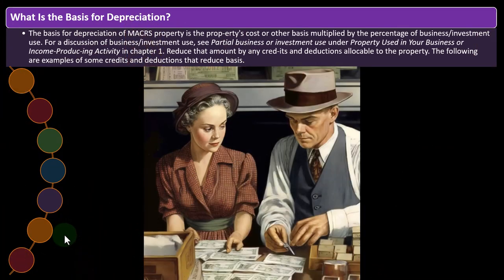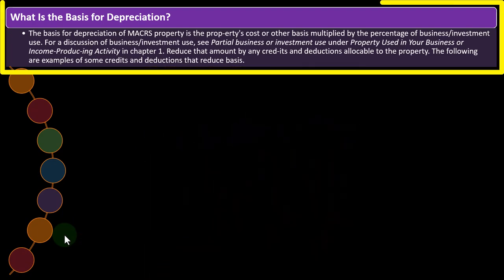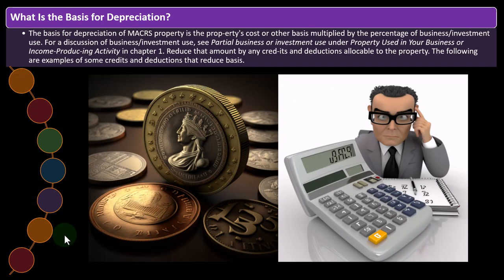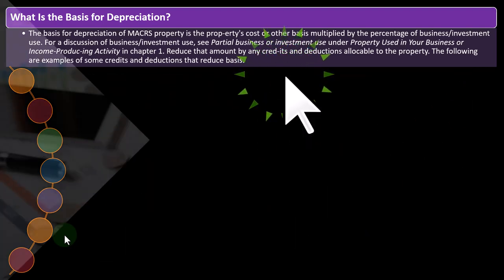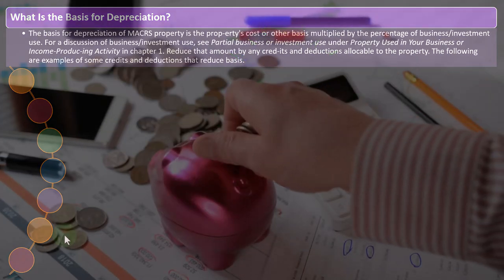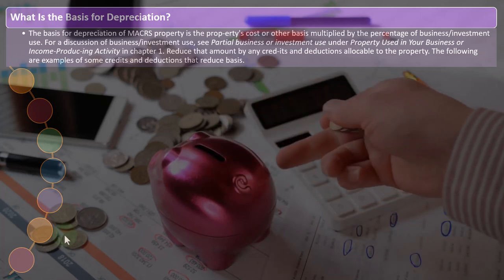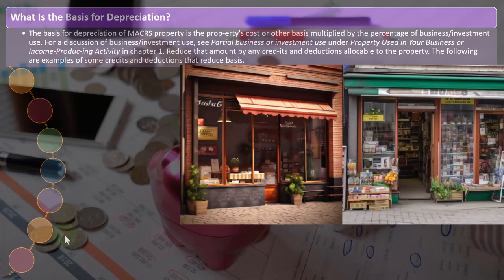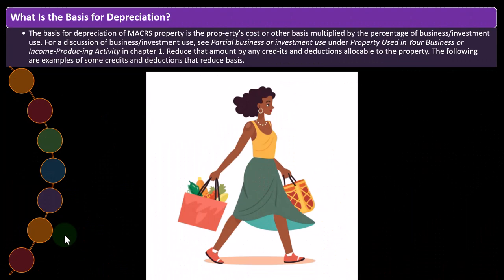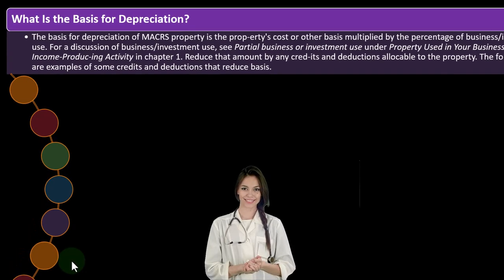What is the basis for depreciation? We can think of the basis as similar to the cost or the adjusted cost of some kind. The basis for depreciation of maker's property is the property's cost or other basis multiplied by the percentage of business or investment use. Obviously, if we use the thing 100% for business, that would essentially be the cost or basis. But if we use it partially for business and partially for personal use, we have to allocate which portion is for business versus personal.